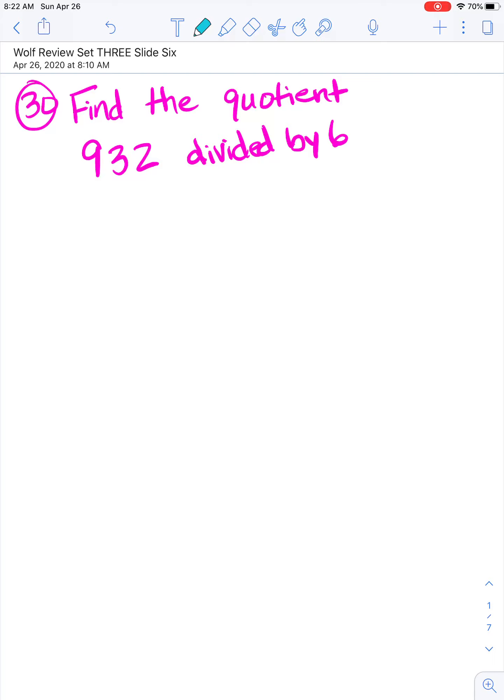Hi class. We are going to be doing Wolf Review Set 3, Slide 6. First problem is to find the quotient. Quotient is the answer to a division problem. So we are going to take 932 divided by 6. Say it as we write it.